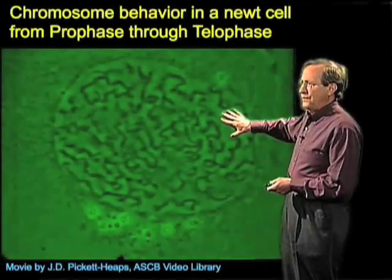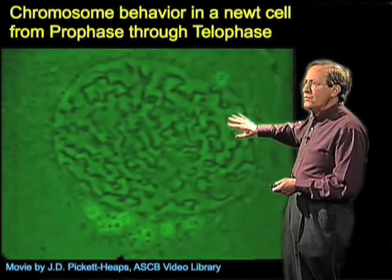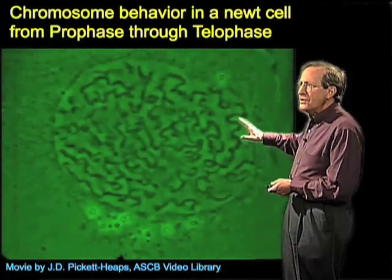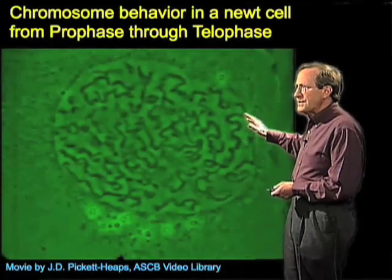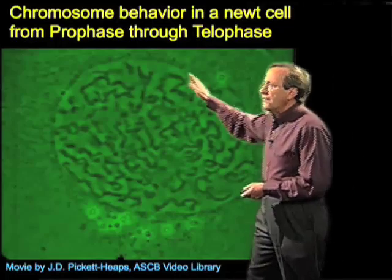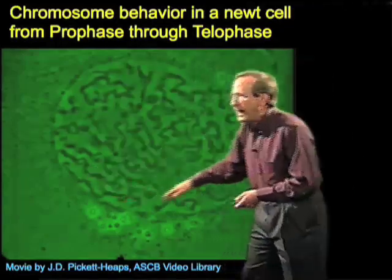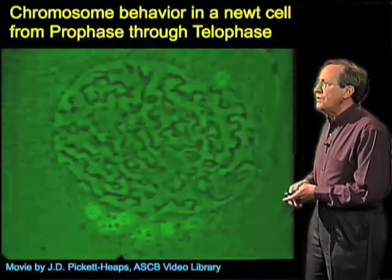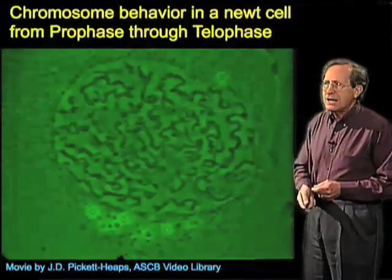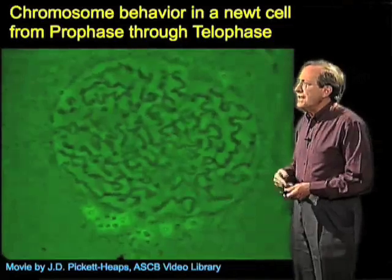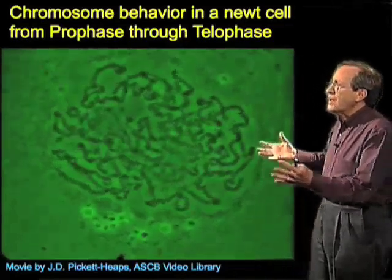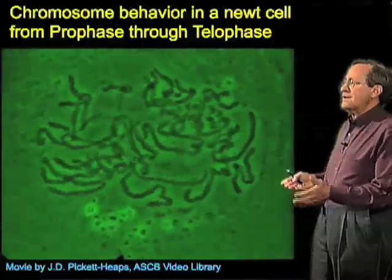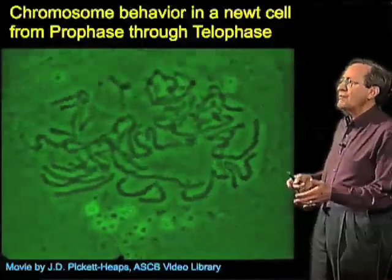This is a still frame from a movie taken by my friend Jeremy Pickett-Heaps of a newt cell in the process of cell division. The nuclear envelope is still intact and you see the condensed chromosomes here within the nucleus. As I run the movie, what you'll see is that the nuclear envelope breaks down and something now affects the chromosome behavior.